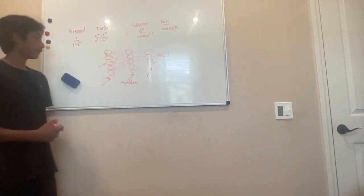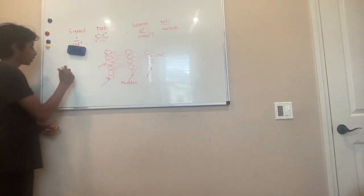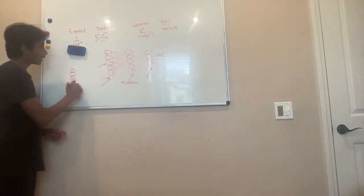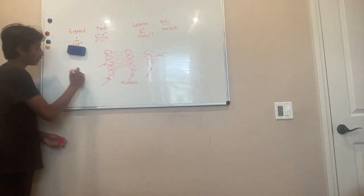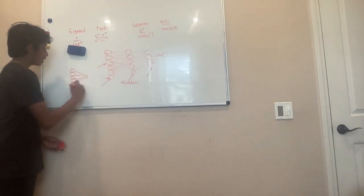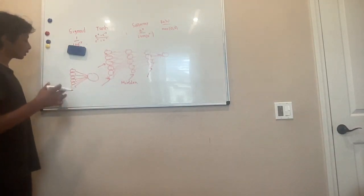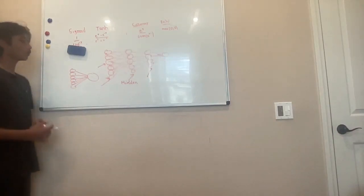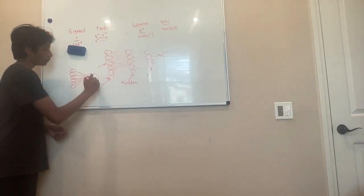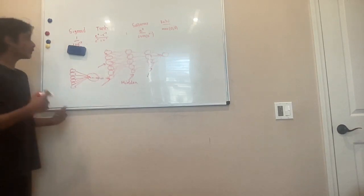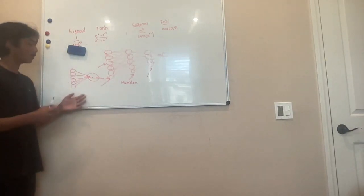A neuron is just a bunch of inputs. If we have a single perceptron network, we're going to have a bunch of inputs, we're going to have weights — these lines are the weights — and some sort of way to determine the output. We're going to be using the weighted sum, which is just all the inputs multiplied by the weights, added up. And then we're going to have an activation function. Our activation function is going to take that weighted sum and optimize it to determine the actual value or output of this neuron.